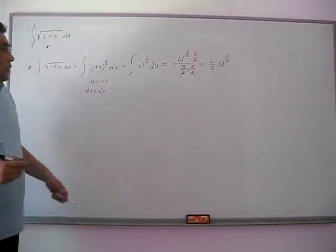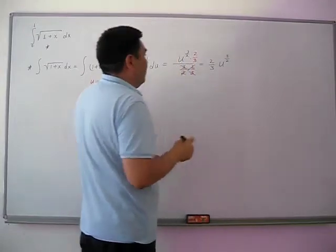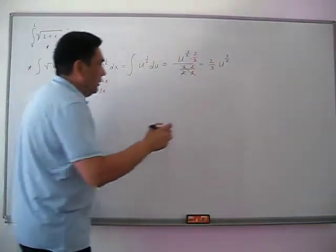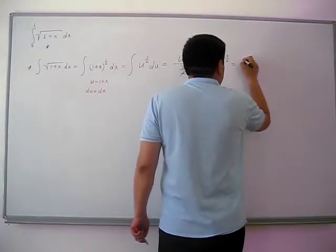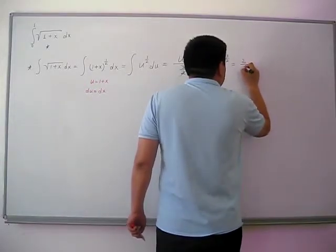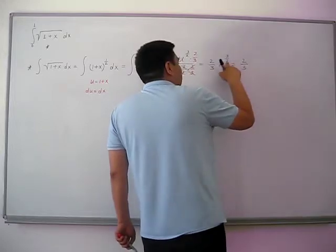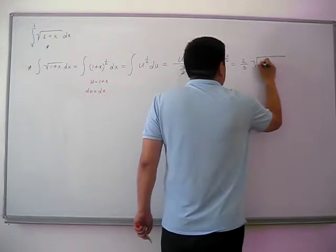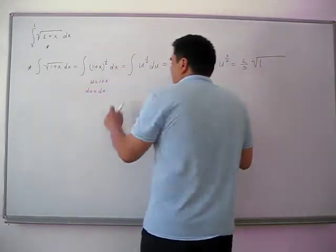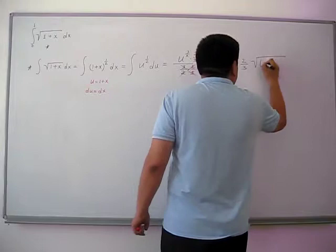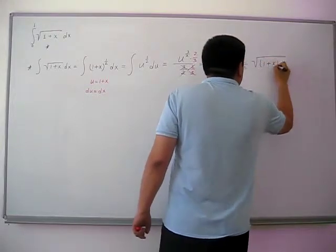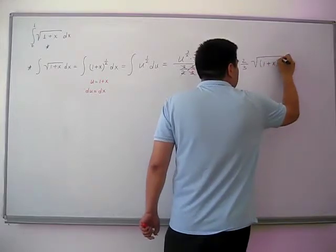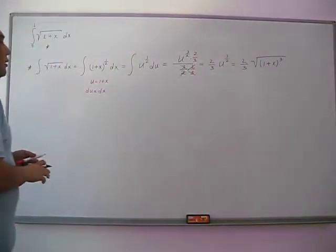And our result must be in x-term, because our integral is given in x-term. So, in that case, we will have 2 third times, denominator of the power is 2, that means it is square root. And u is 1 plus x, and numerator of the power is 3, that means this 1 plus x quantity cubed.